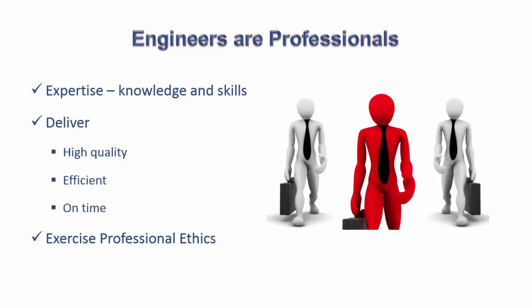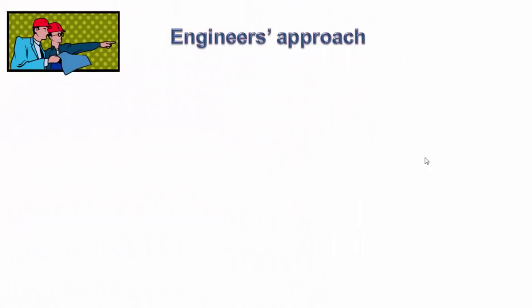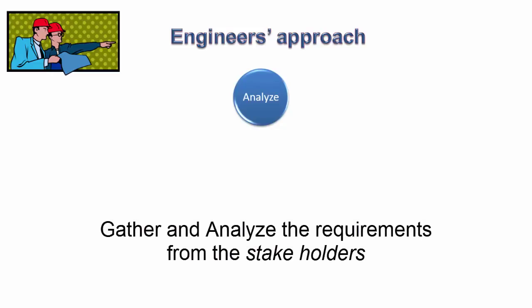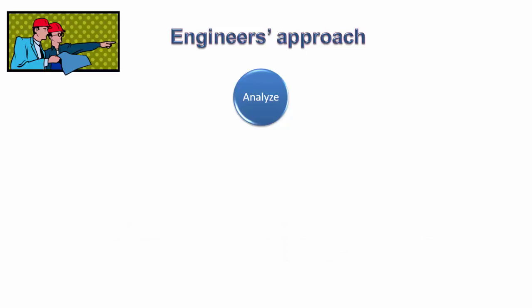Now let us see the approach taken by an engineer. The first step is understanding the problem itself, done by analyzing the details. They gather all additional details from various stakeholders — a stakeholder is a person or group capable of affecting or being affected by the problem and its solution. Next, there can be multiple solutions possible for the same problem. The job is to generate all such possibilities, then carefully evaluate and find the best strategy leading to an optimal and economical solution.